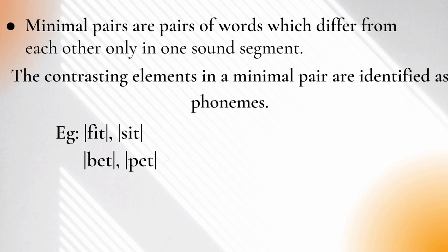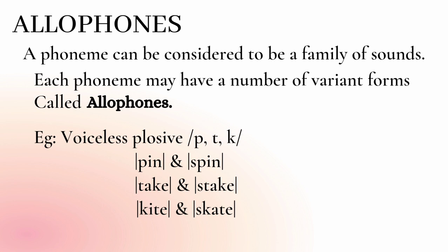Hope you understand about phonemes and minimal pairs. Now, let's move to the topic allophones. We have already discussed the term phonemes. A phoneme can be considered to be a family of sounds. Each phoneme may have a number of variant forms called allophones, occurring in different contexts. The allophones of a phoneme have considerable phonetic similarity between them as well as differences, and they do not occur in the same phonetic environment.